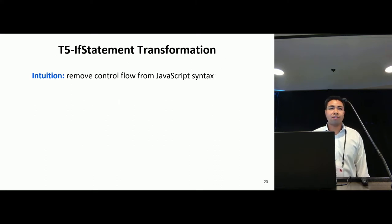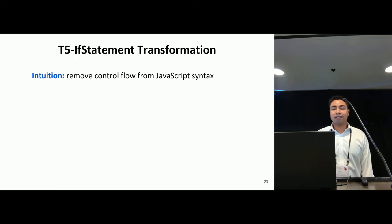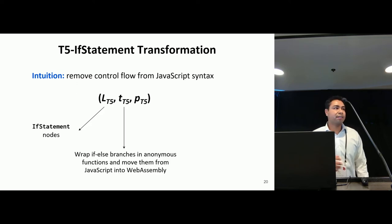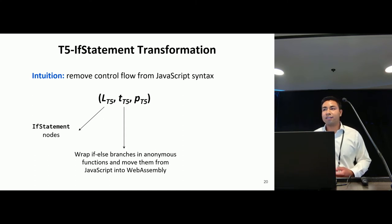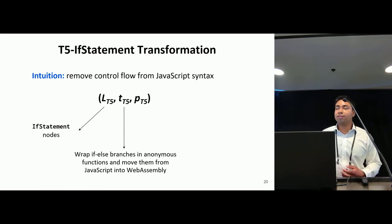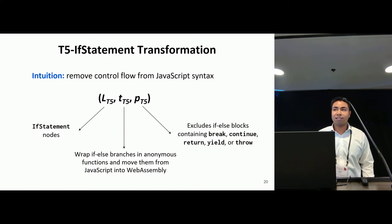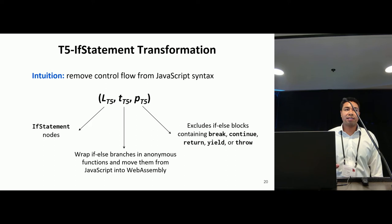Rule T5 if-statement aims to remove control flow information from the JavaScript file. This transformation targets if-statement nodes, and it works by wrapping the if and else branches of the original statement with anonymous functions, then moving their execution from JavaScript to WebAssembly. This rule cannot be applied to if-else blocks that contain certain keywords such as break, continue, and return, as doing so could break the syntax or semantics of the program.